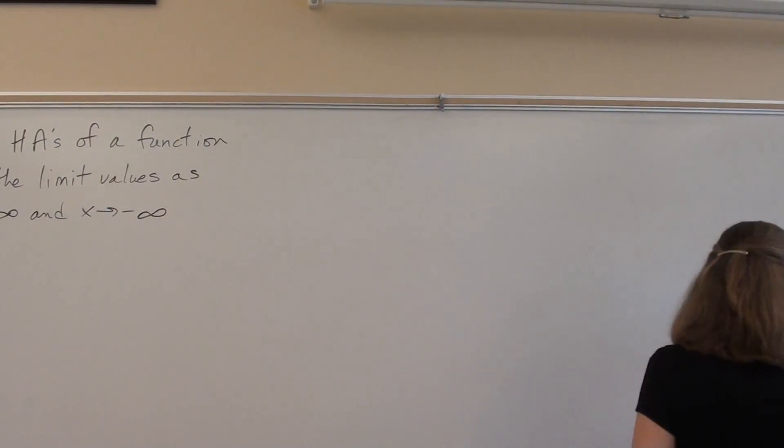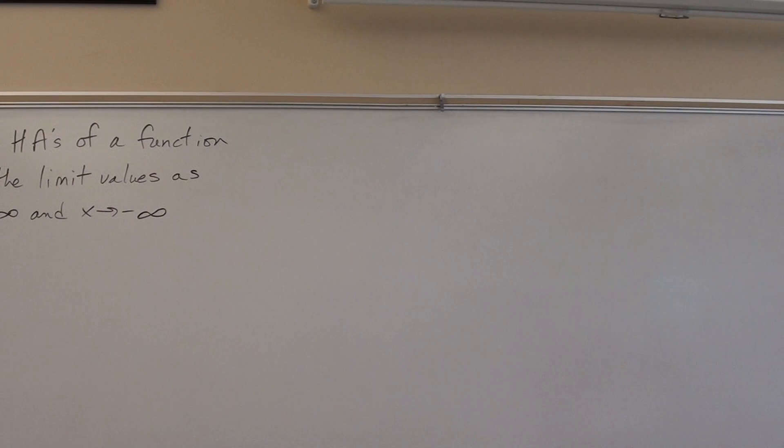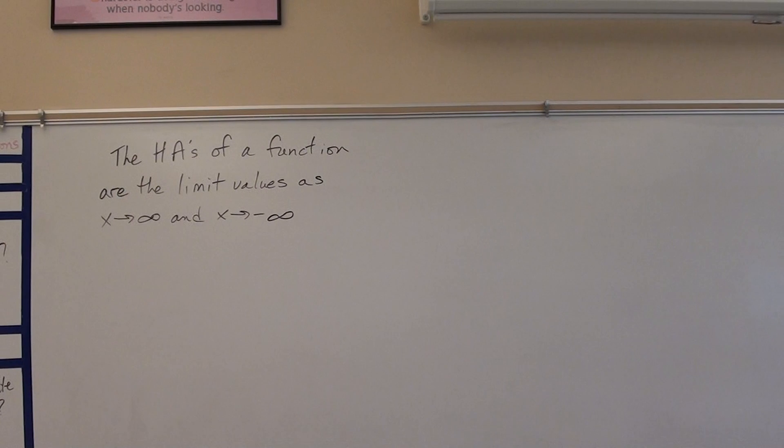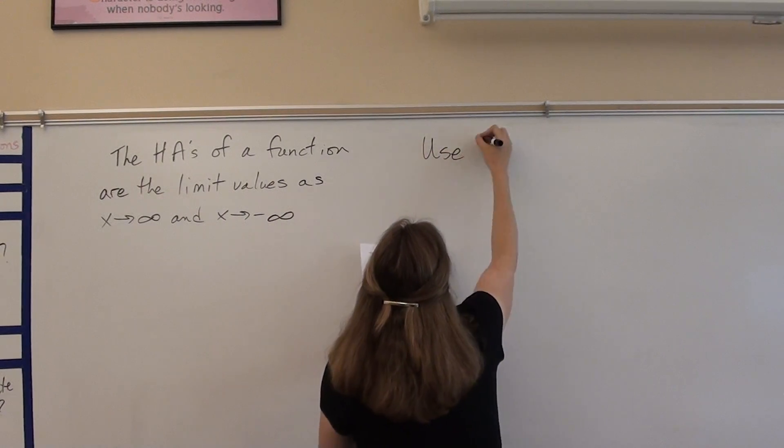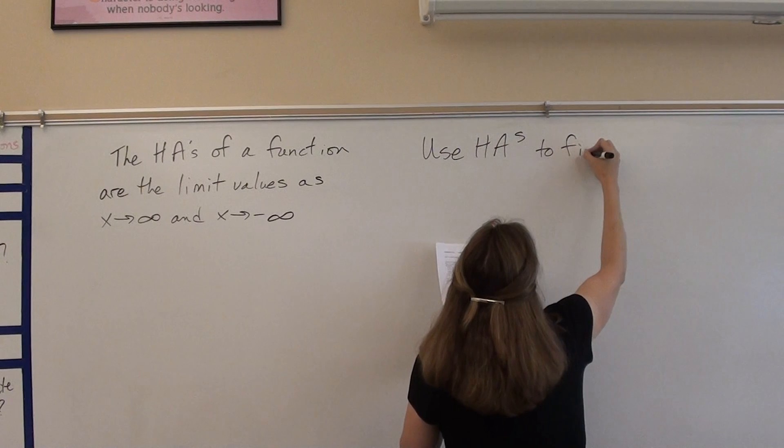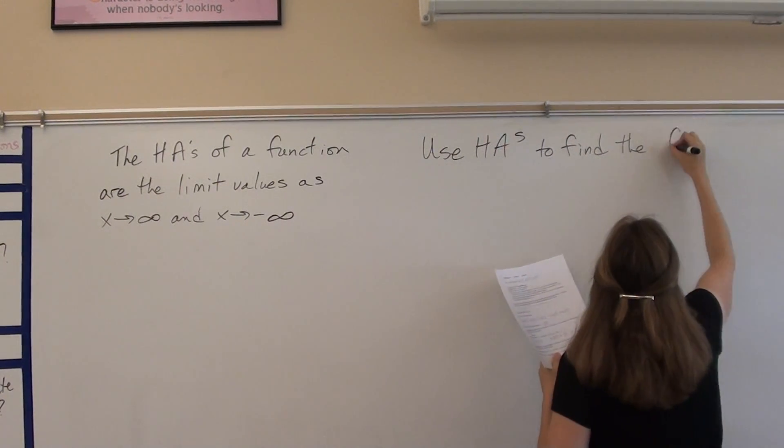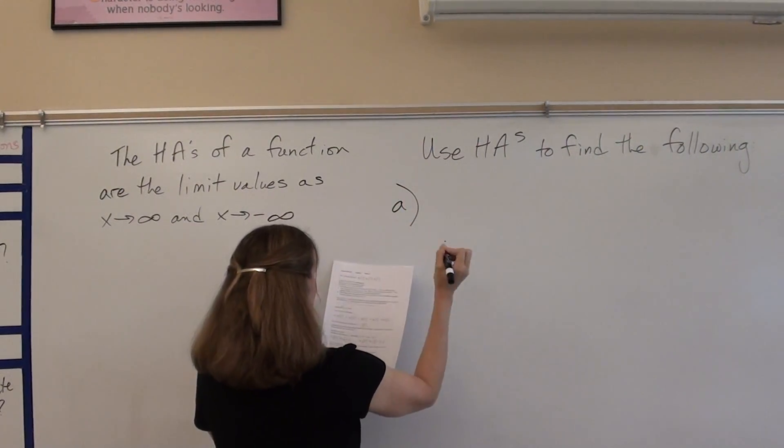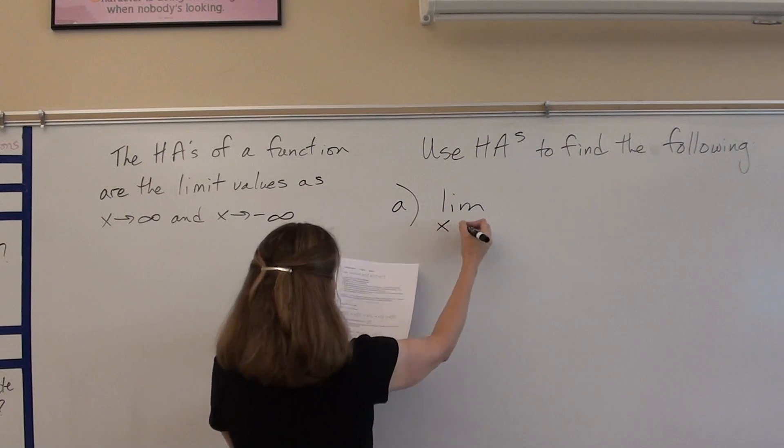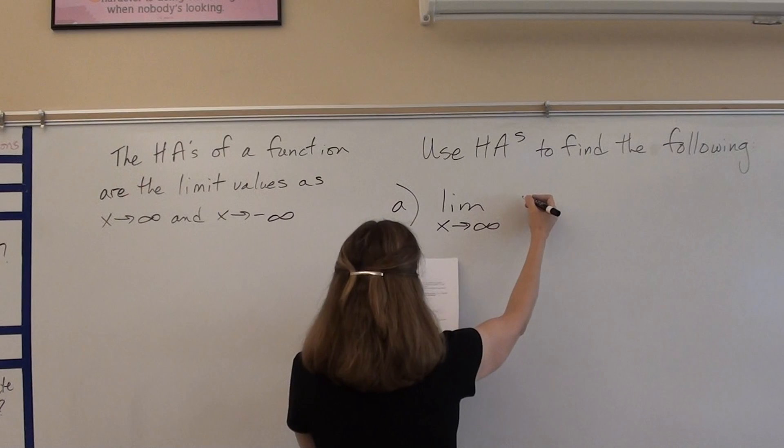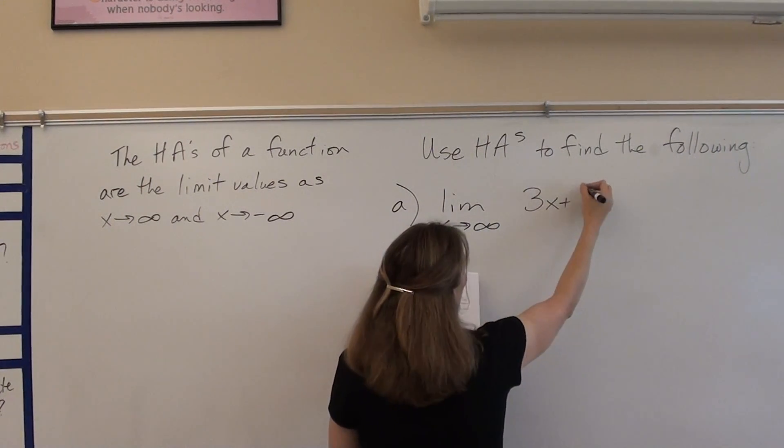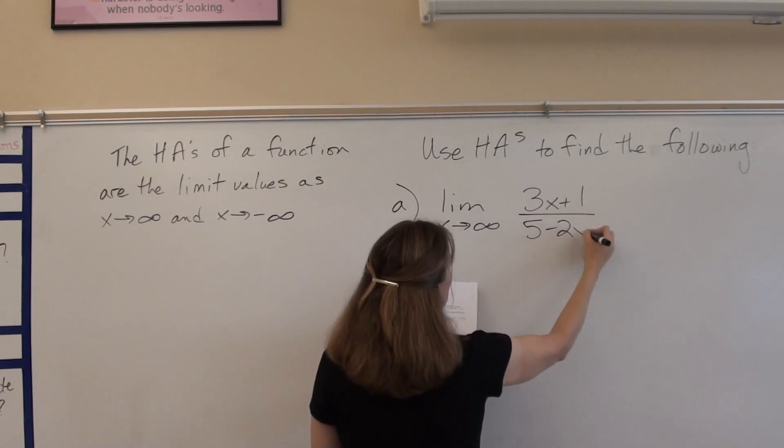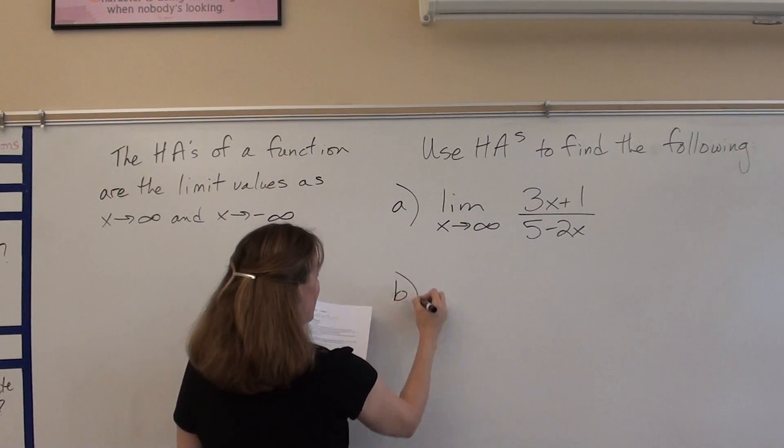Which means the three horizontal asymptote rules that we discussed during the pre-calc review, we're going to use today to find a bunch of limits. So I'm going to put some limits on the board that I want you guys to try. You're going to use horizontal asymptotes to find the following limits. And remember, if the degree of the top is bigger, there's no horizontal asymptote. If the degrees are the same, how do you find it? You divide the leading coefficients. And then if the bottom is bigger, it's what? Zero.